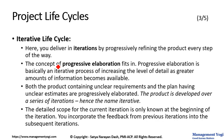In Iterative Life Cycle, you deliver in iterations by progressively refining the product every step of the way. In the Iterative Life Cycle, we are progressively refining the product because the requirement clarity is not there. As you pass through many iterations, more and more clarity comes in and the product is progressively developed. The concept of Progressive Elaboration fits in here.